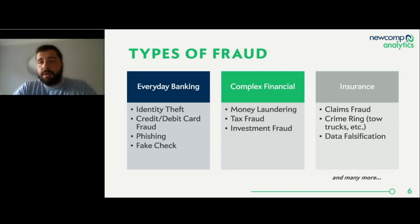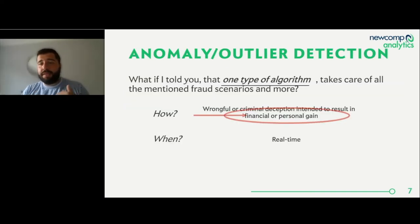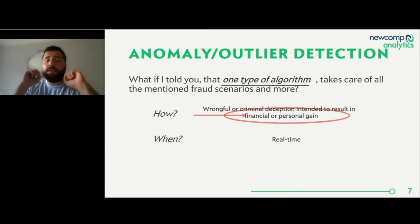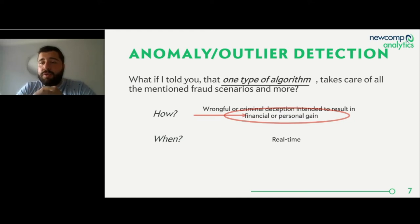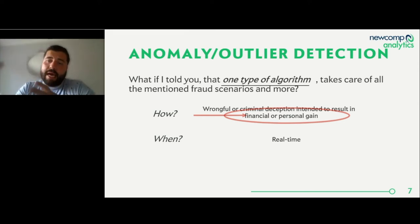All of these fraud scenarios can be tackled with one type of algorithm: anomaly/outlier detection. One type of algorithm can take care of all those fraud scenarios and more. Why? Because ultimately it focuses on the financial or personal gain. It doesn't really matter what the inputs are — we're looking at the output: what's the payout, what's the dollar amount, what's the financial or personal gain.